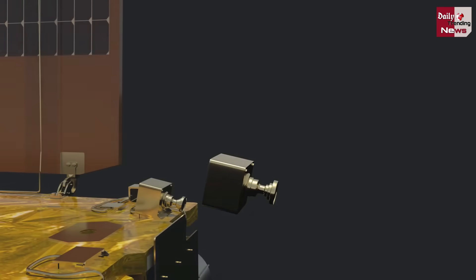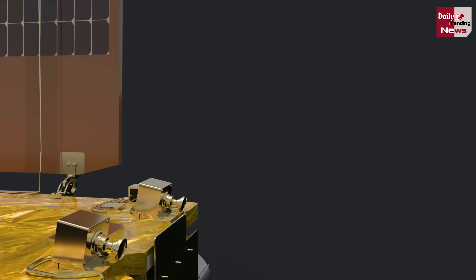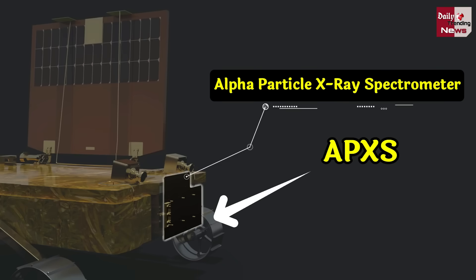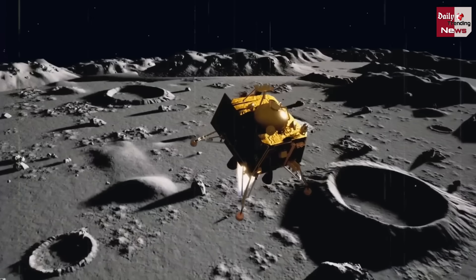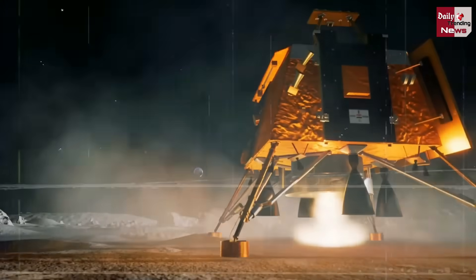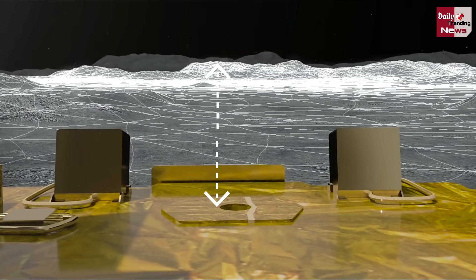Rover mein Alpha Particle X-ray Spectrometer yaani APXS laga hua hai. Yeh landing site ke aas-paas ki jagah ka vishleshan karega — landing site par maujood tattvon ki pehchaan ki jayegi.